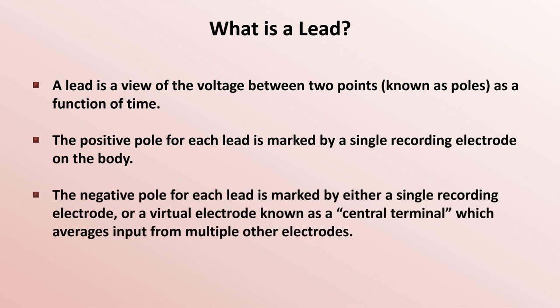The negative pole for each lead is marked by either a single recording electrode, or a virtual electrode known as a central terminal, which averages input from multiple other electrodes.